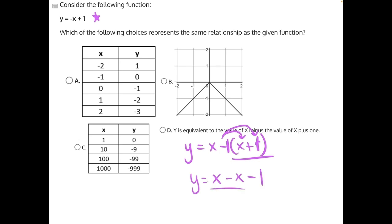Now we can simplify, combine our like terms, and get Y is equal to X minus X is 0. So we're left with negative 1. Y equals negative 1 does not match our equation up here. So that means answer choice D is incorrect.